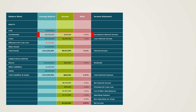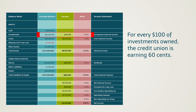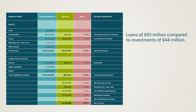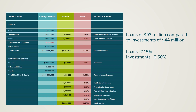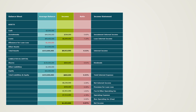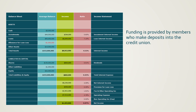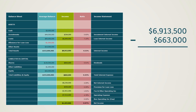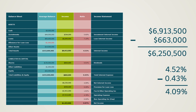Investments generate $264,000, which is a yield of 0.60%. This means that for every $100 of investments owned, the credit union is earning $0.60. Compare this to the loans, which generate $6.6 million at a yield of 7.15%. Not only does this credit union have a higher concentration or mix of loans of $93 million compared to $44 million, but the rate earned on these loans is also higher at 7.15% compared to 0.60%. In order to make these loans and purchase the investments, the credit union must have funding. Funding is provided by members who make deposits into the credit union. This credit union has $130 million in shares. The expense of these shares is $663,000, at a cost of 0.51%. The difference between interest income and interest expense is $6.3 million, and the net yield on the credit union's assets is 4.09%.